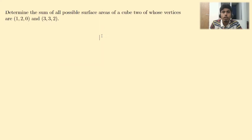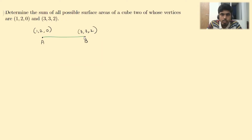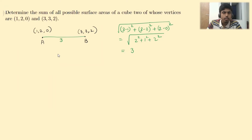Two of whose vertices are (1, 2, 0) and (3, 3, 2). Before we start, let's find the distance between the points A = (1, 2, 0) and B = (3, 3, 2). Using Euclid's distance formula: the distance equals the square root of (3−1)² + (3−2)² + (2−0)², which is √(4 + 1 + 4) = √9 = 3. So the distance is 3.